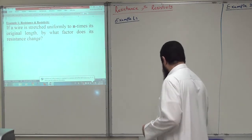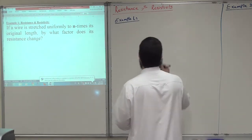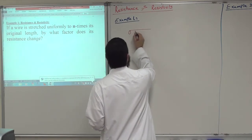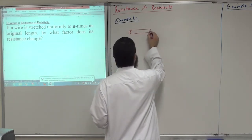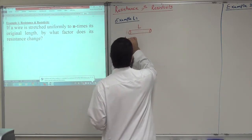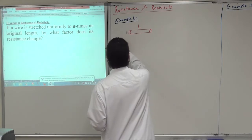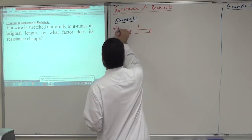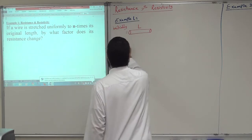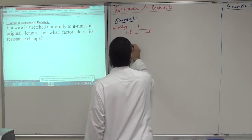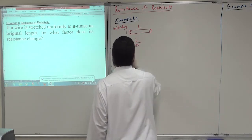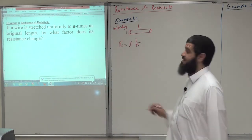Let me draw the original wire. The wire originally has length L and cross-sectional area A. Its initial resistance R_initial equals rho multiplied by L divided by the area. This is the initial resistance.